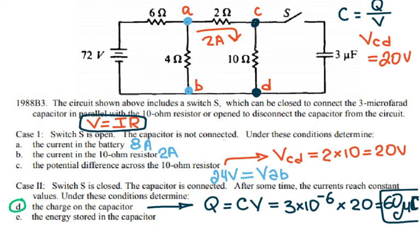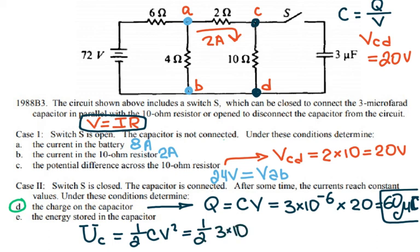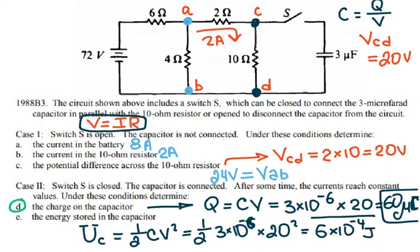For the energy stored in the capacitor, I use the formula for potential energy: U = ½CV². With capacitance 3 × 10⁻⁶ farads and voltage 20 volts: ½ × 3 × 10⁻⁶ × 20² = 6 × 10⁻⁴ joules. That is the energy stored in the capacitor.